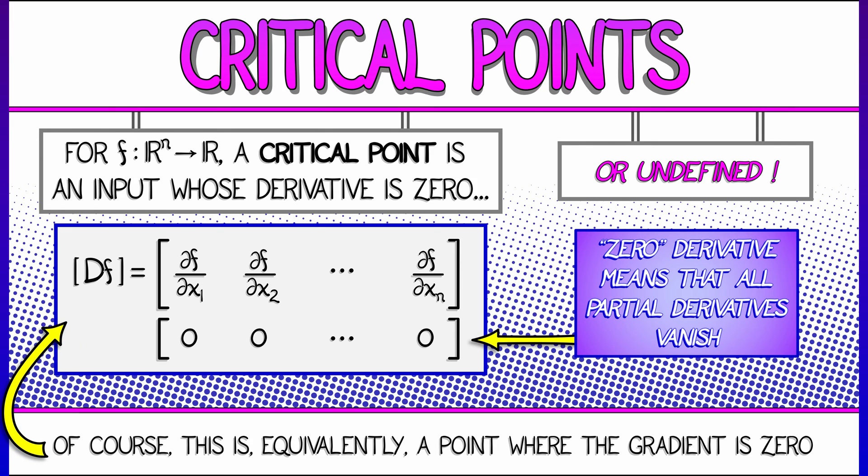If you prefer to think more geometrically, you could say that this is where the gradient is a zero vector, or again, undefined. That is what a critical point is.